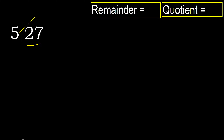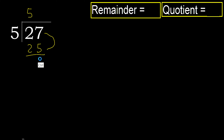5 multiplied by 6 is 30. 30 is greater. 5 multiplied by 5 is 25. 25 is not greater — ok. 27 minus 25 is 2.